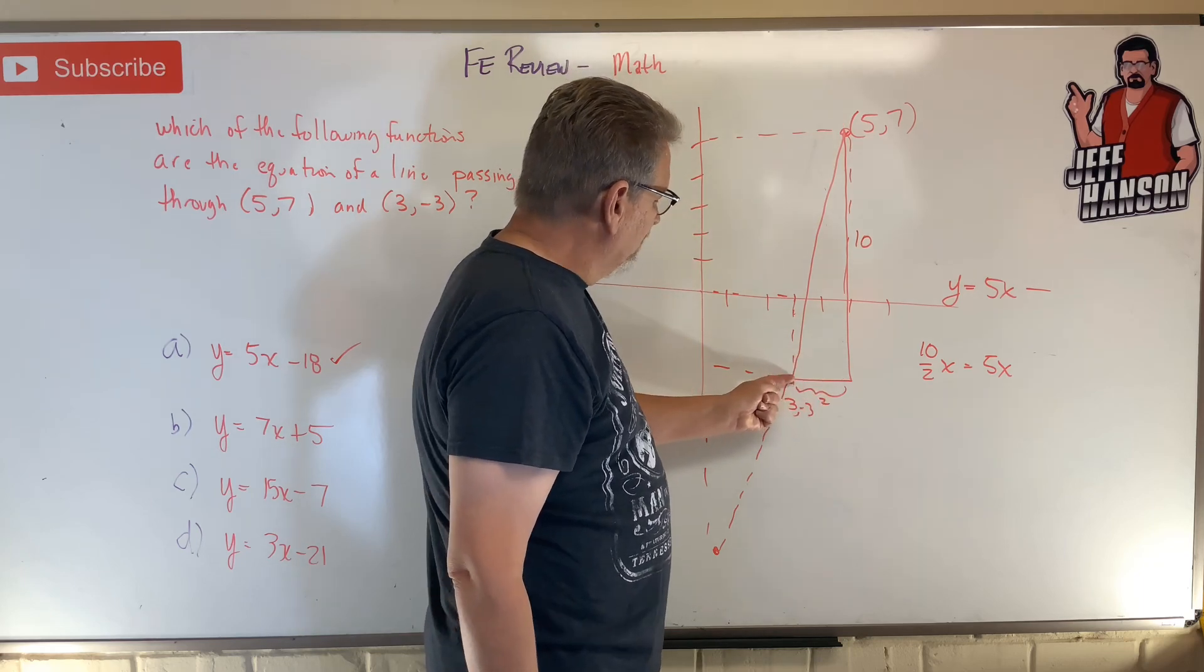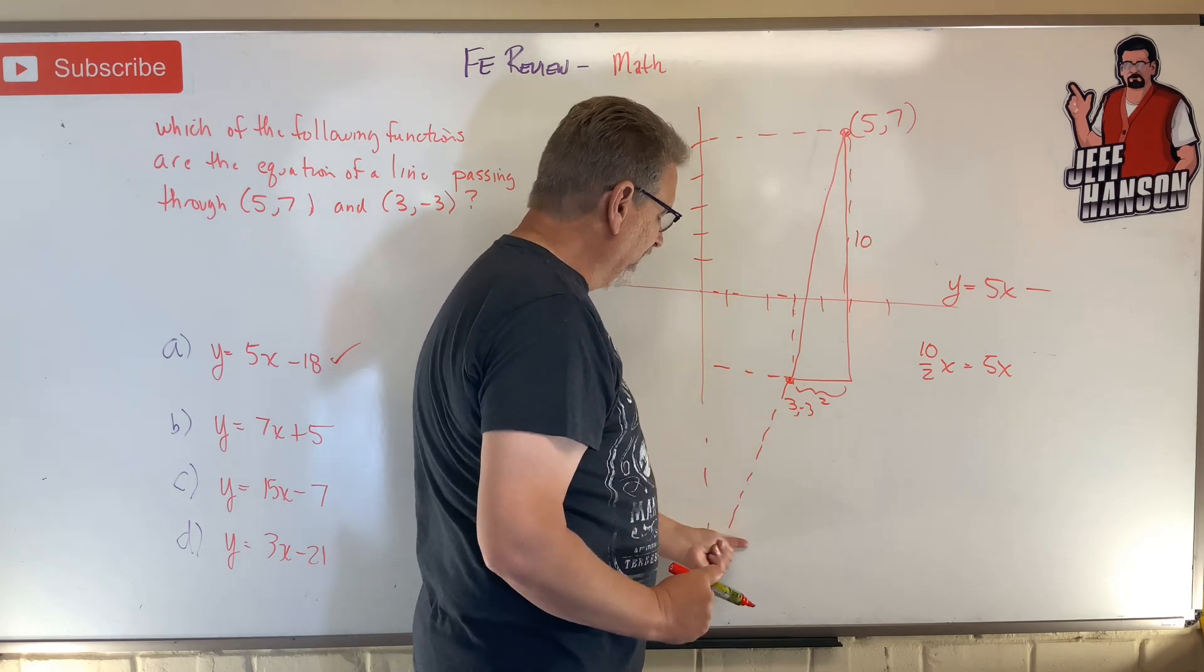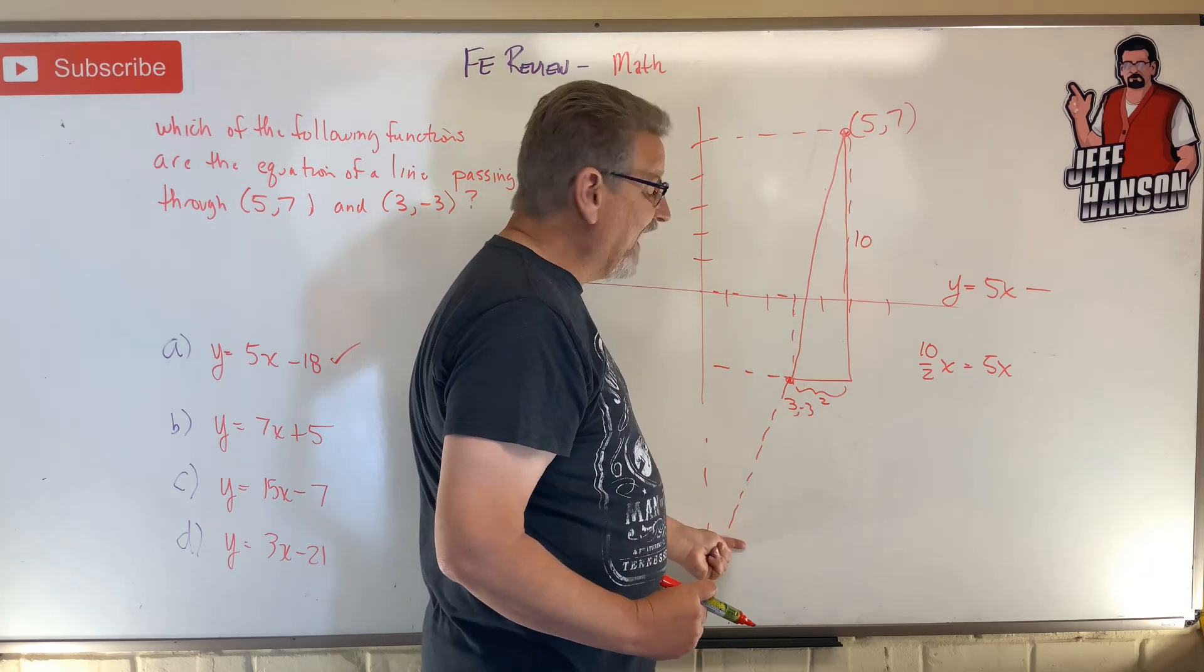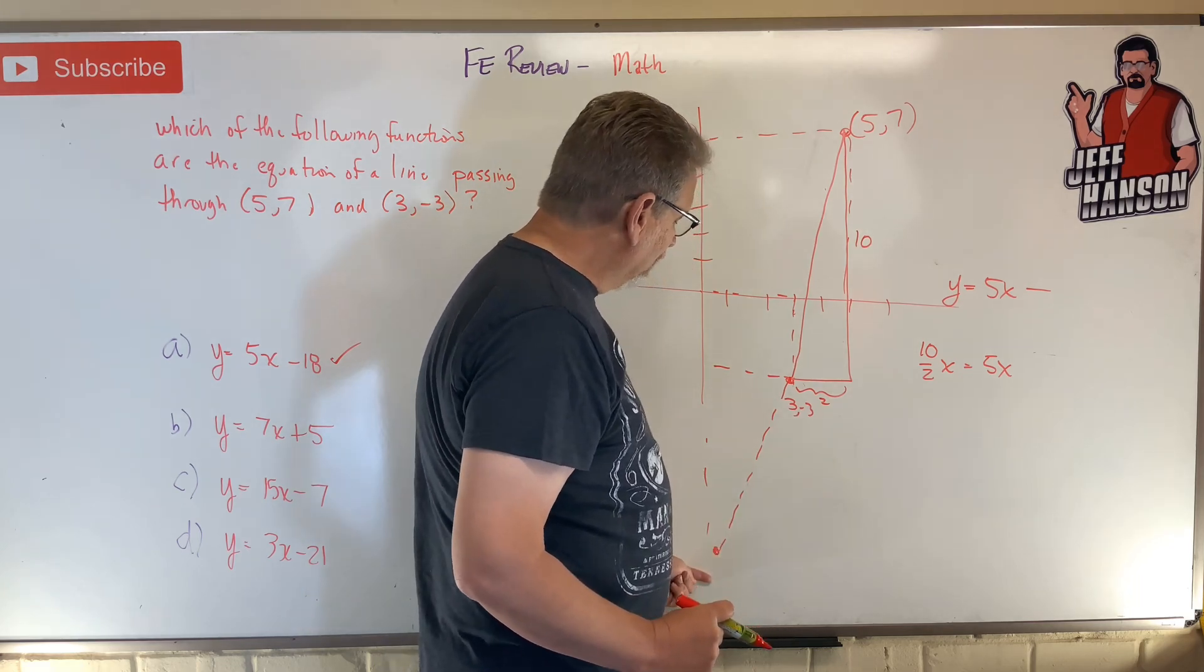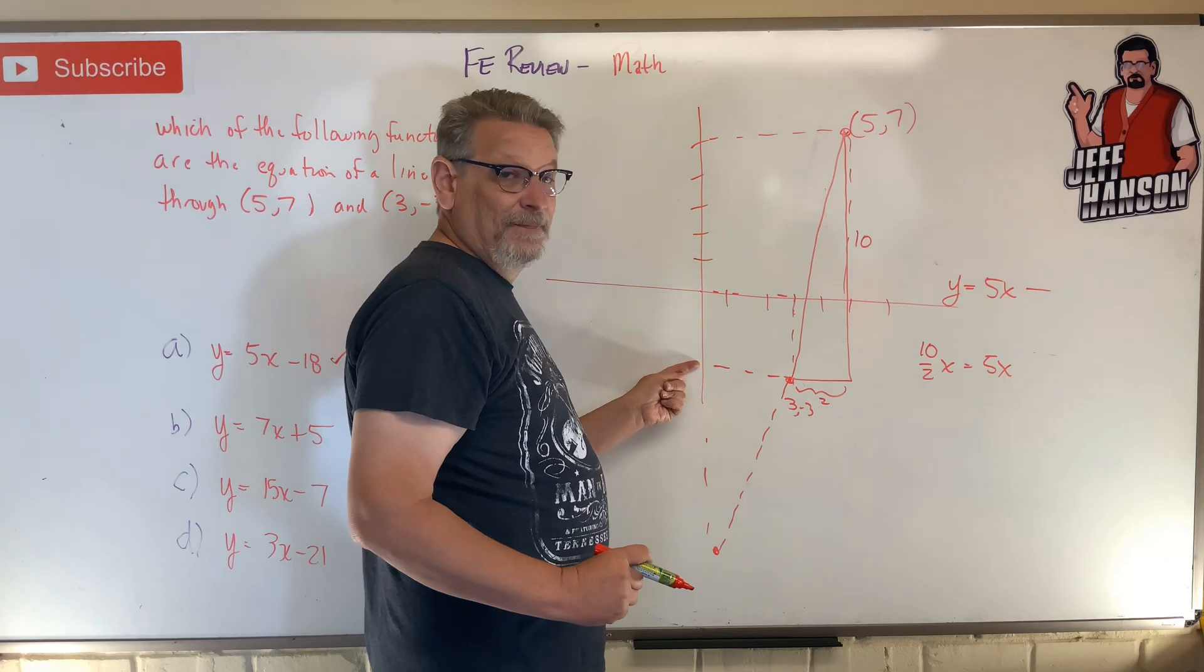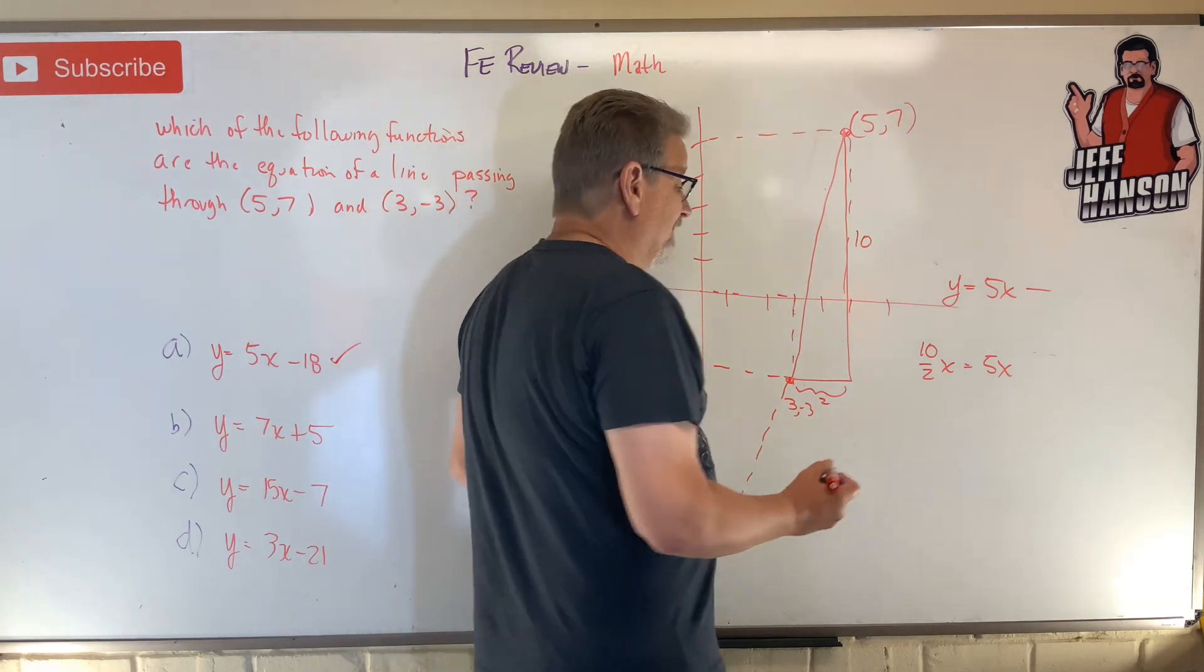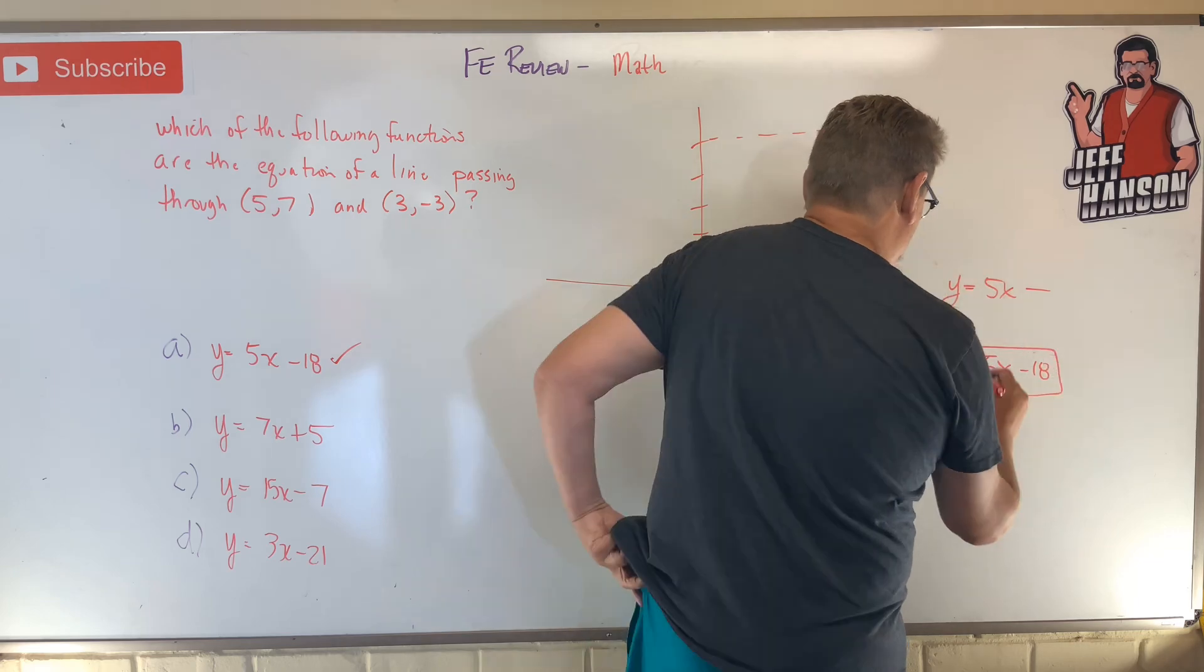And look, if it goes down 10 to go over 2, if I go down 10 more from -3, that only gets me over 2. I got to go half again, so I got to go down 15 more to cross the axis. But 15 from -3, so 15 plus -3 is -18. Okay, so that's our answer.